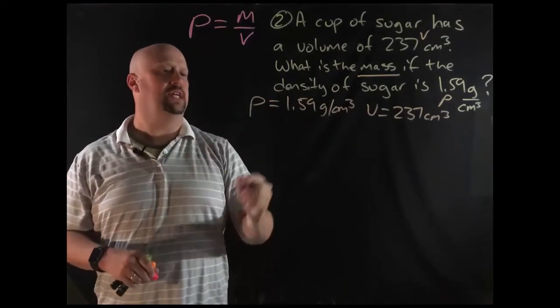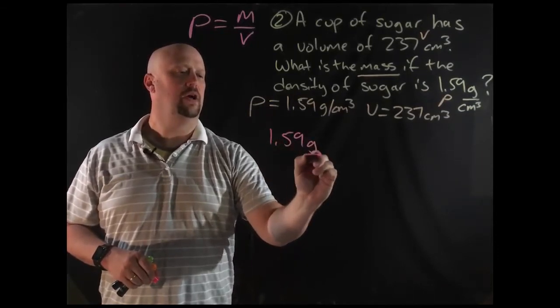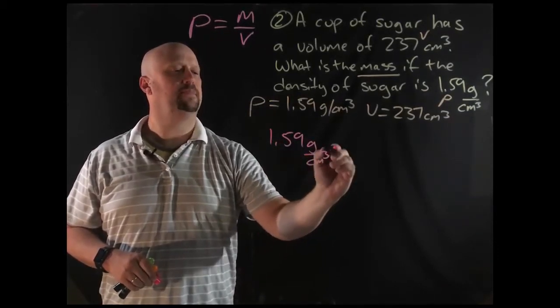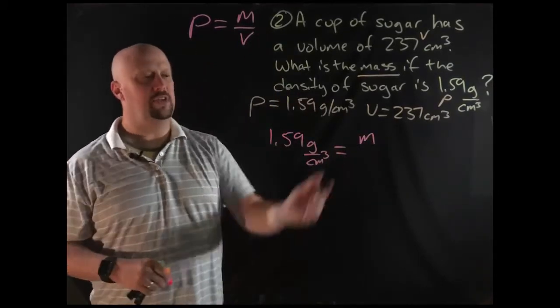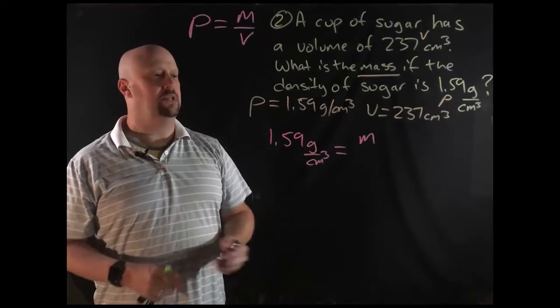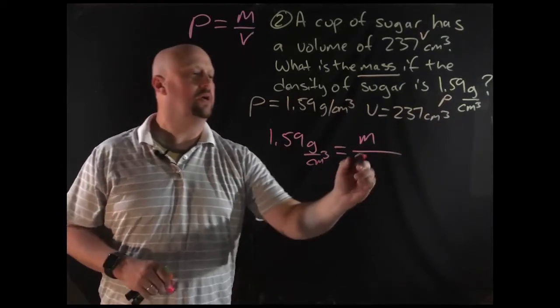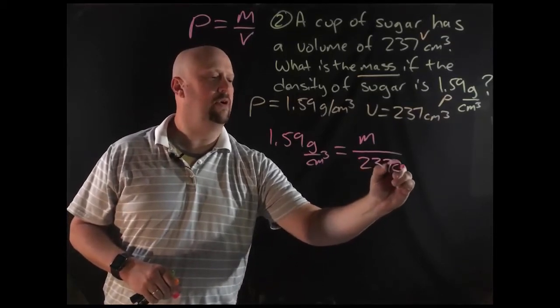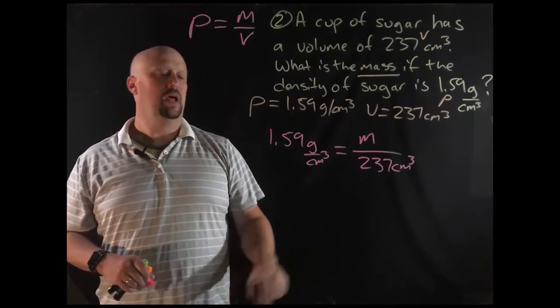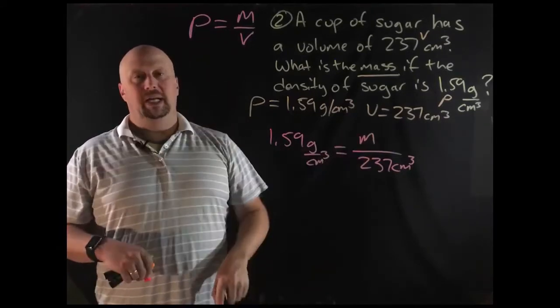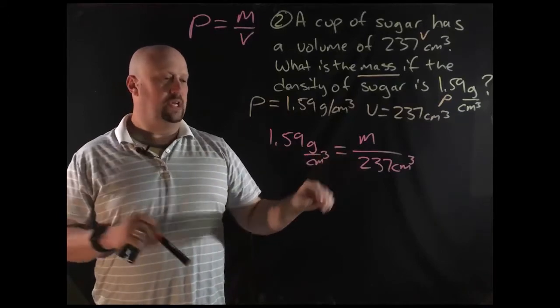So let's plug these into our density equation. I know the density. 1.59 grams per cubic centimeter is equal to mass is what I'm looking for. So you can either leave that as the variable m, that's what I would do, or you could plug that in as an x, but either way will work. Over the volume that we have, where did I get the volume from? From right there. So this is my equation. Now, I want to get m by itself, right, algebraically, so that's relatively simple, okay?